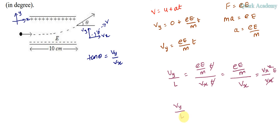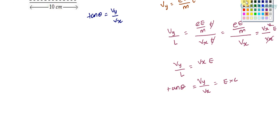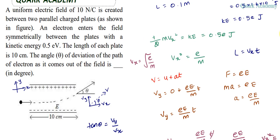VX squared is given by e by M, so VX equals root of e by M. Rearranging: VY by VX equals E times L. We know that VY by VX is tan theta. Let's substitute E and L values.